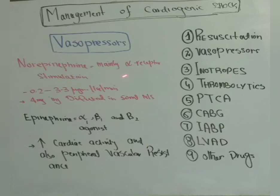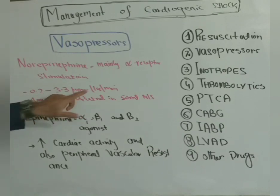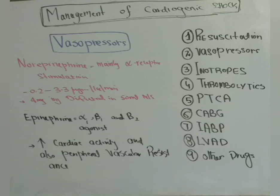Norepinephrine is the drug of choice when there is no or poor response to dopamine. It primarily stimulates alpha receptors, increasing peripheral vascular resistance and thereby raising blood pressure. A 4 mg injection is diluted in 50 ml normal saline and infused at 0.2 to 3.3 mcg/kg/min. Epinephrine is used when everything else fails. It stimulates alpha-1, beta-1, and beta-2 receptors — increasing peripheral vascular resistance, cardiac activity, and stroke volume, but decreasing splenic and renal blood flow.